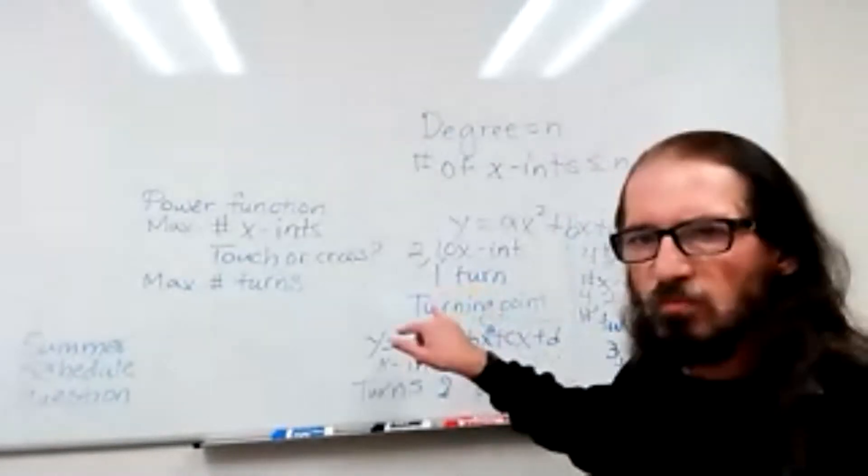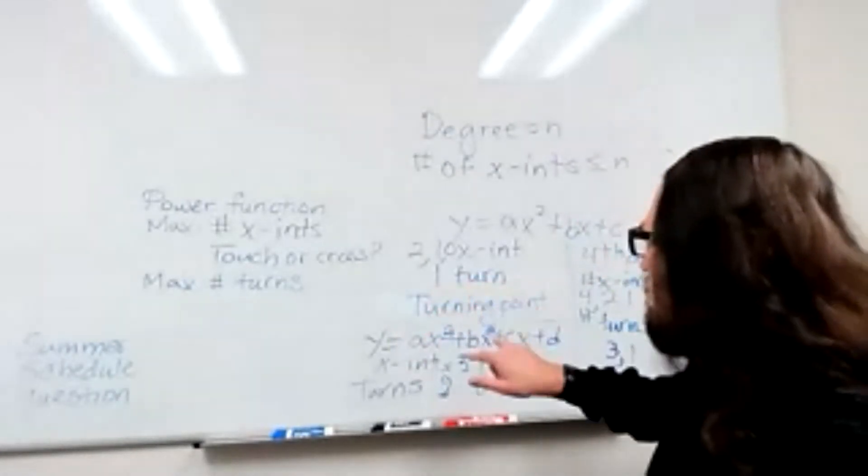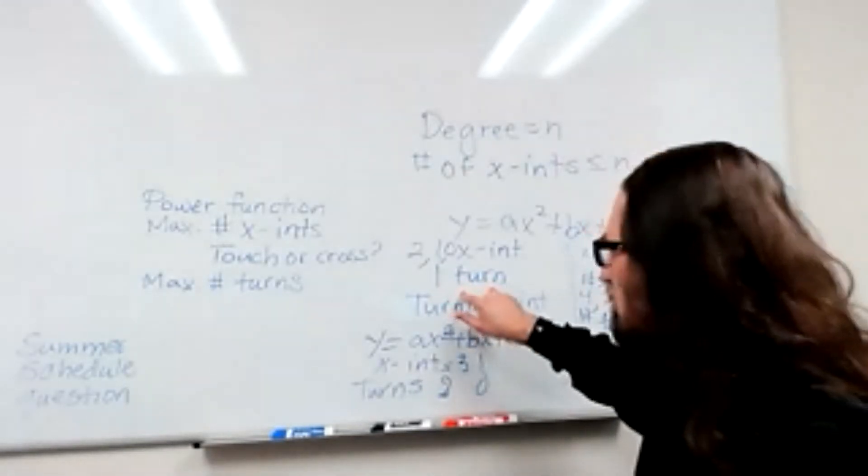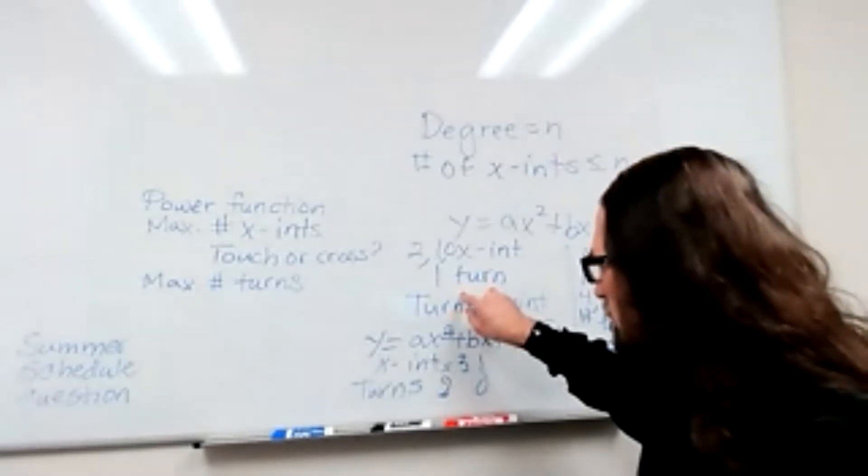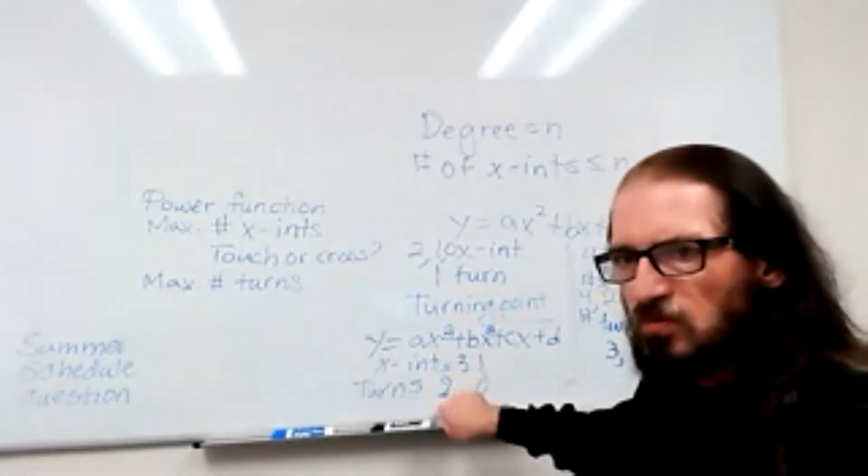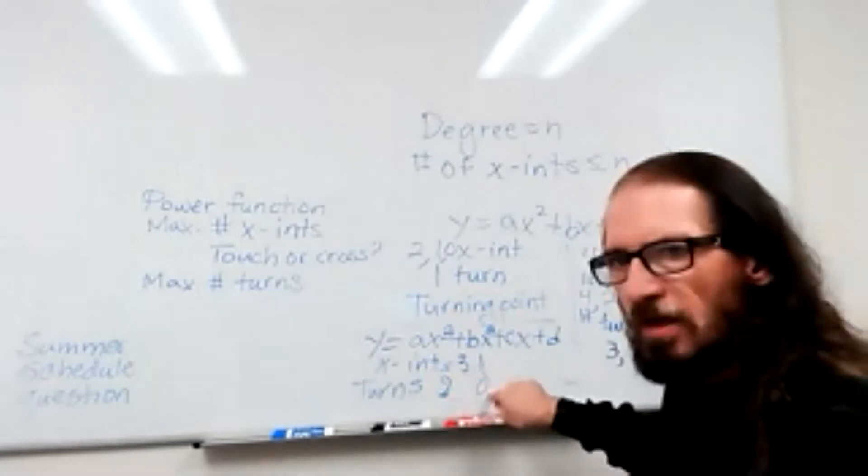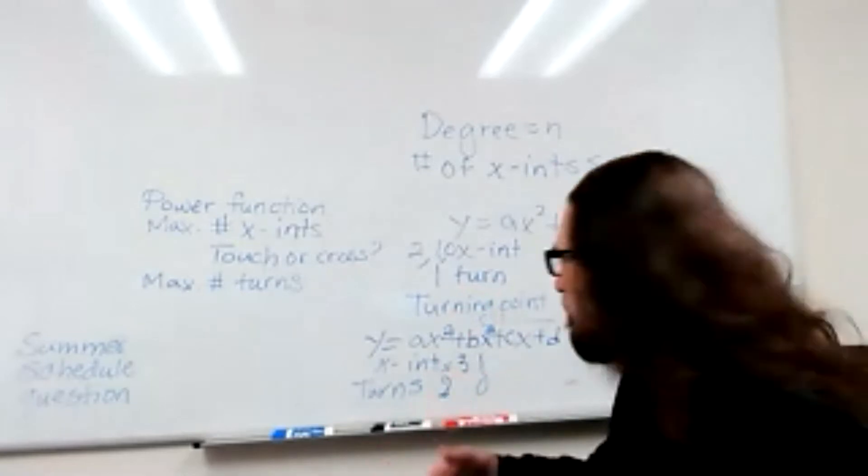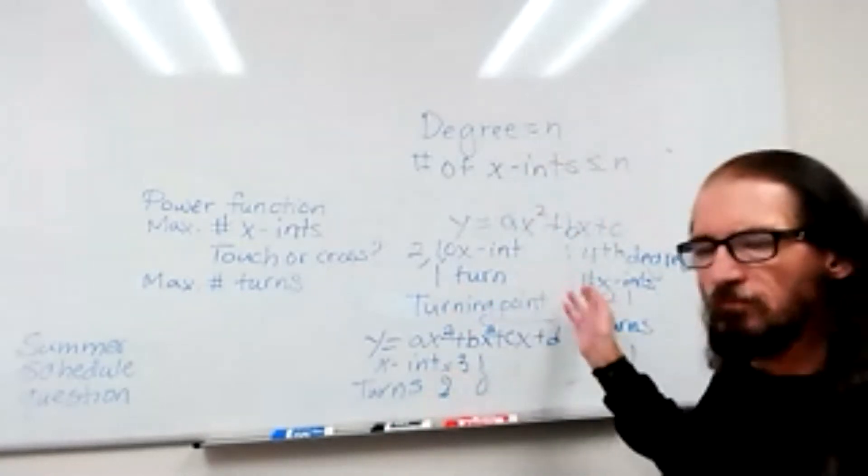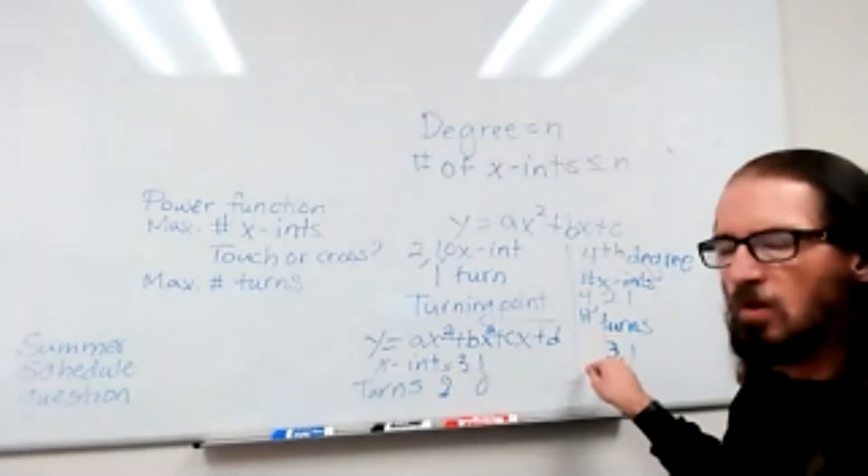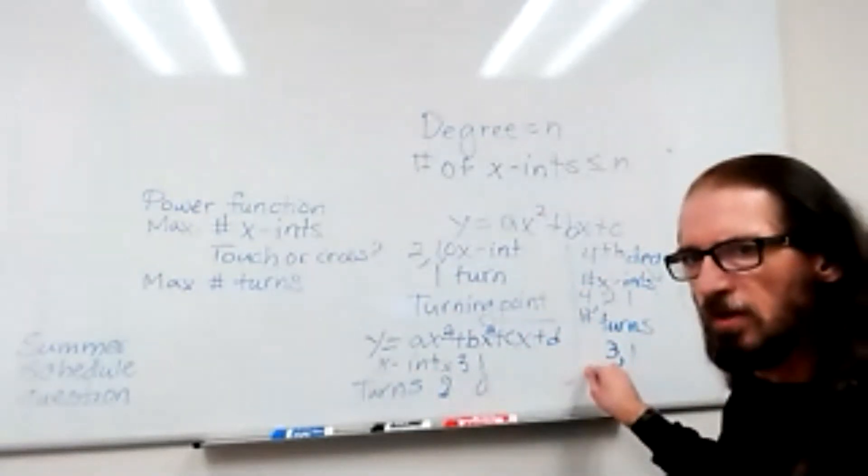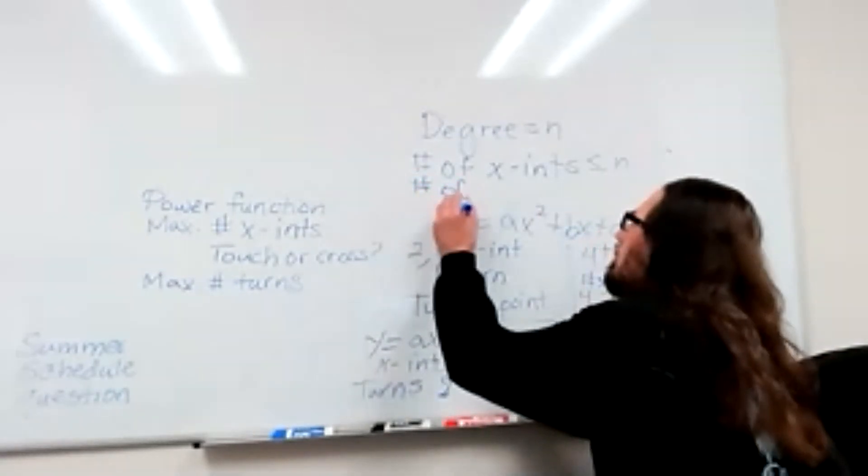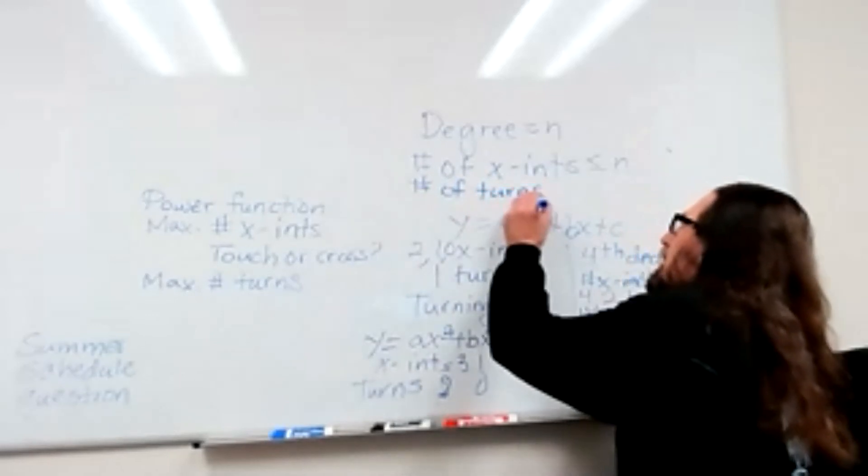Whereas the number of turns, the quadratics had one, that's one less than the degree. The cubics had at most two but could have less. Two is one less than the degree of a cubic. And for the fourth degree, the most number of turns we got was three. That's one less than the degree. So the number of turns less than or equal to n minus one.